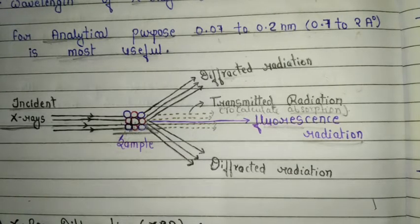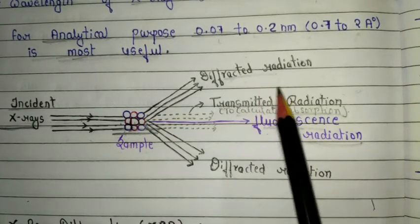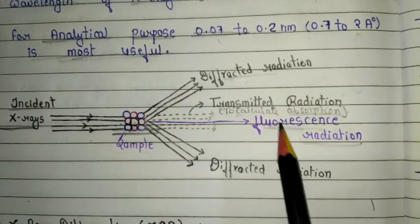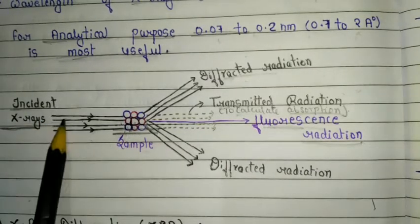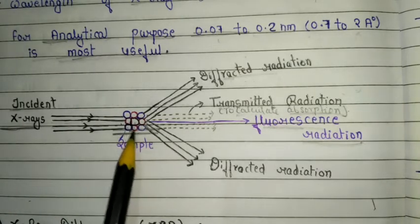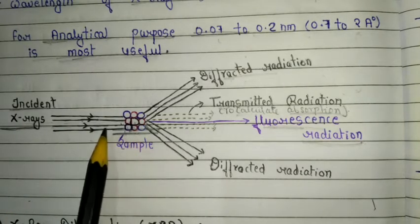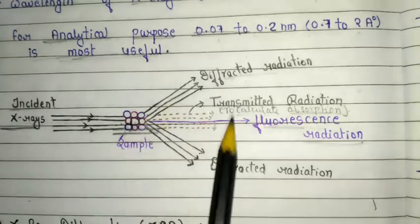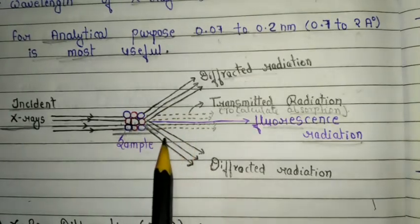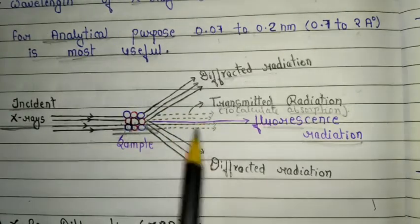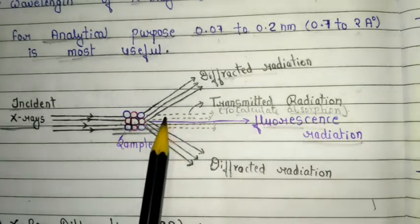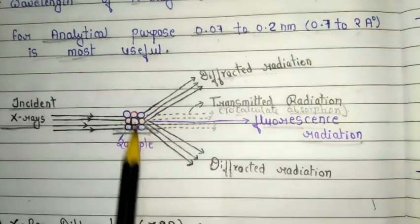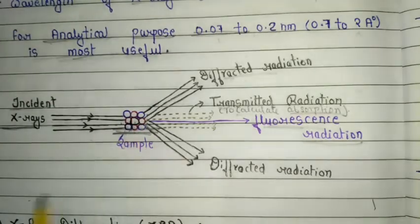What is diffracted radiation? Diffracted radiation is completely dependent on the atoms present in the sample. When incident X-ray strikes the sample, some X-rays are diffracted — meaning we get these radiations at many angles. This diffracted radiation completely depends on the atom structure present in the sample.